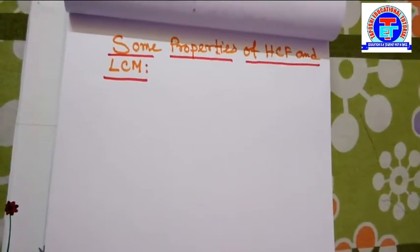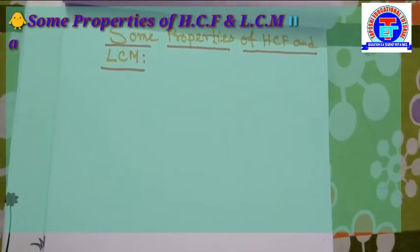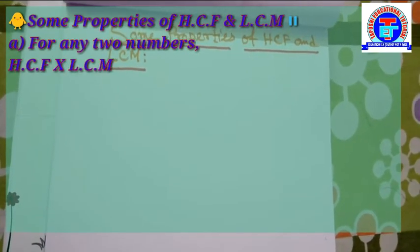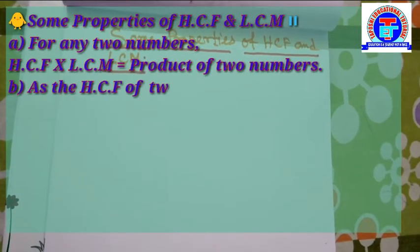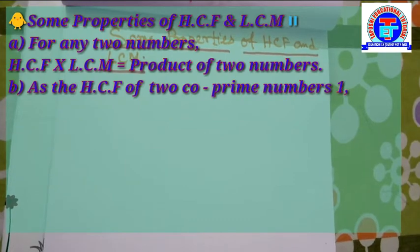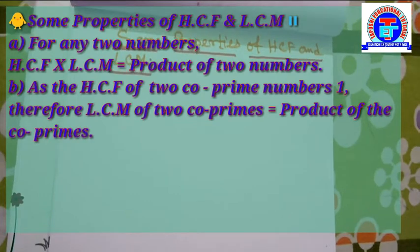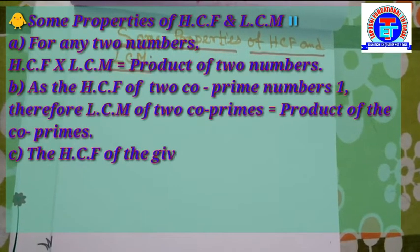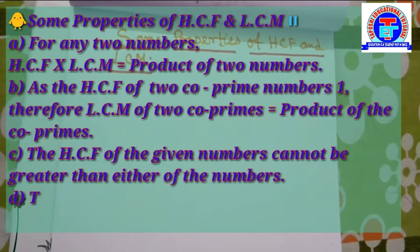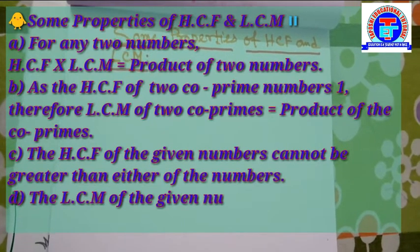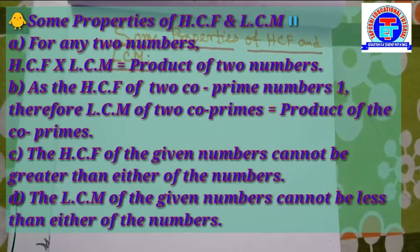First property A: for any two numbers, HCF into LCM is equal to the product of the two numbers. As the HCF of two co-prime numbers is one, therefore the LCM of two co-prime numbers is equal to the product of the co-prime numbers.